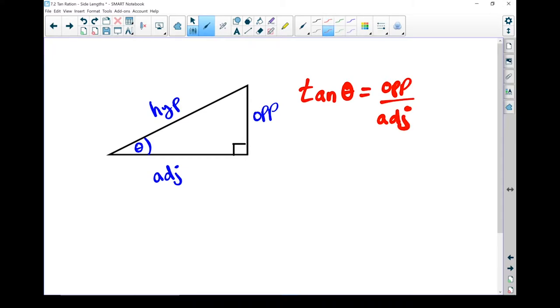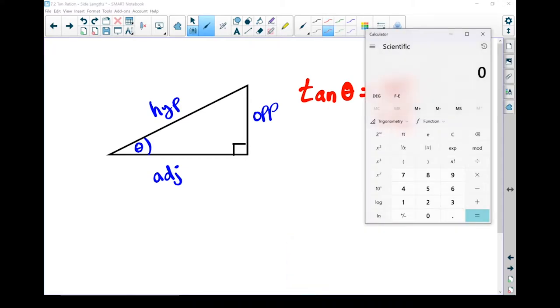A couple other details that I need to remind you of. When we're looking at our calculator, you need to be in degree mode. If you are not in degree mode, it doesn't work right. Just as a reminder, radians and gradients are just other ways of measuring angles. For this course, we're only really worried about degrees.